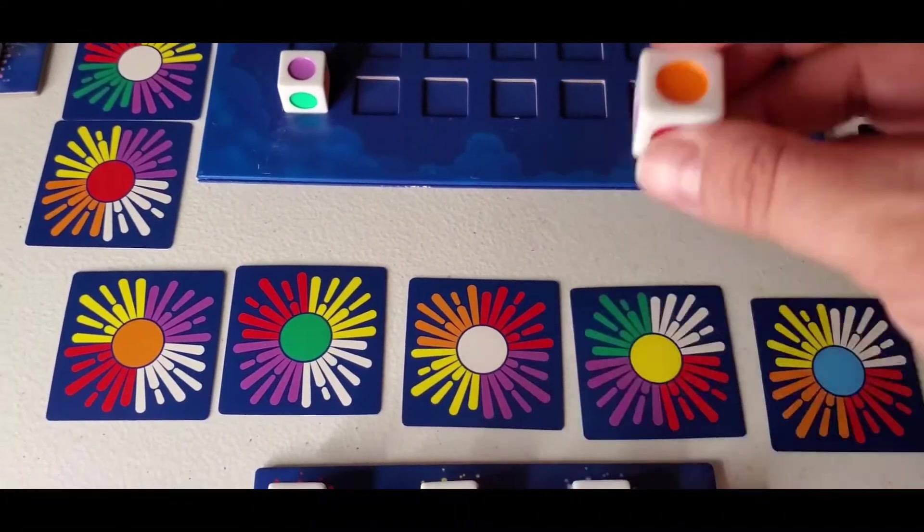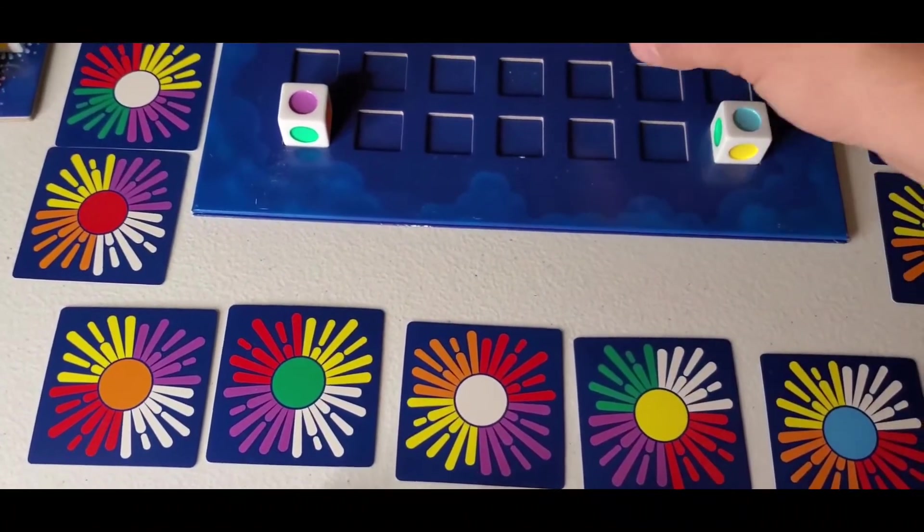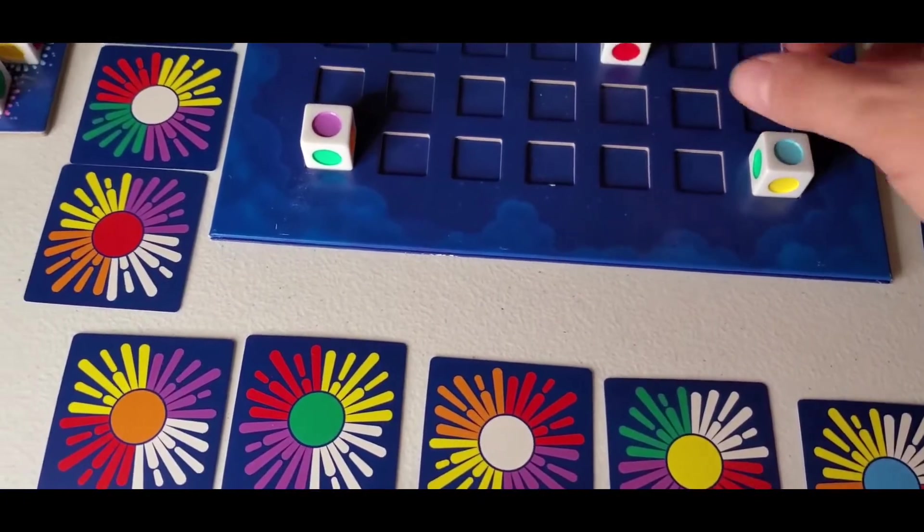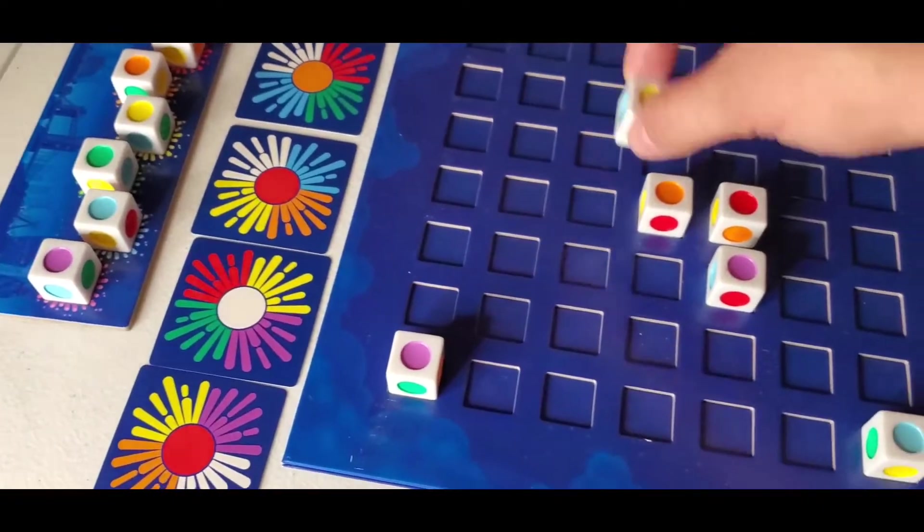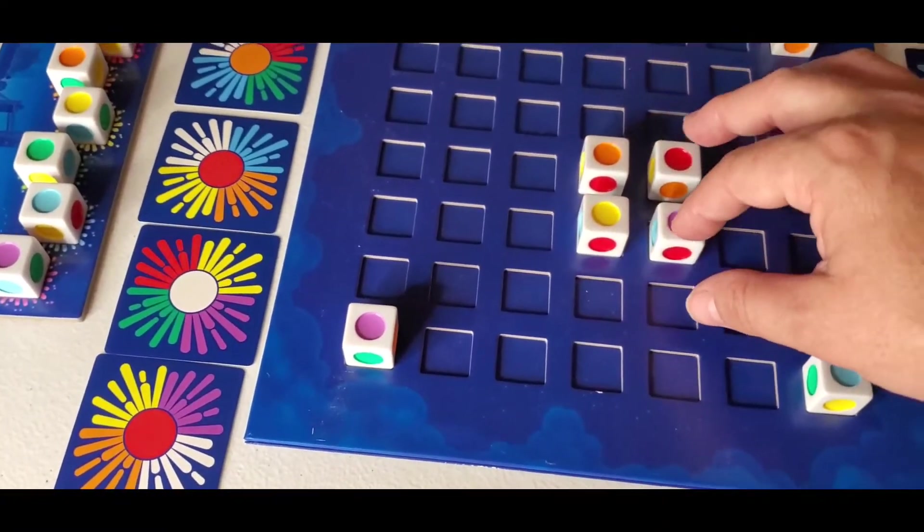So if I were this player right here, I would draw a block from the bag and then I'm going to decide based on my cards what I want to play. So if I was trying to do this one, I would probably put this one down here as a purple. And then on each turn, you can either place a block or move a block. So I could have moved this one down here if I wanted or played that one.